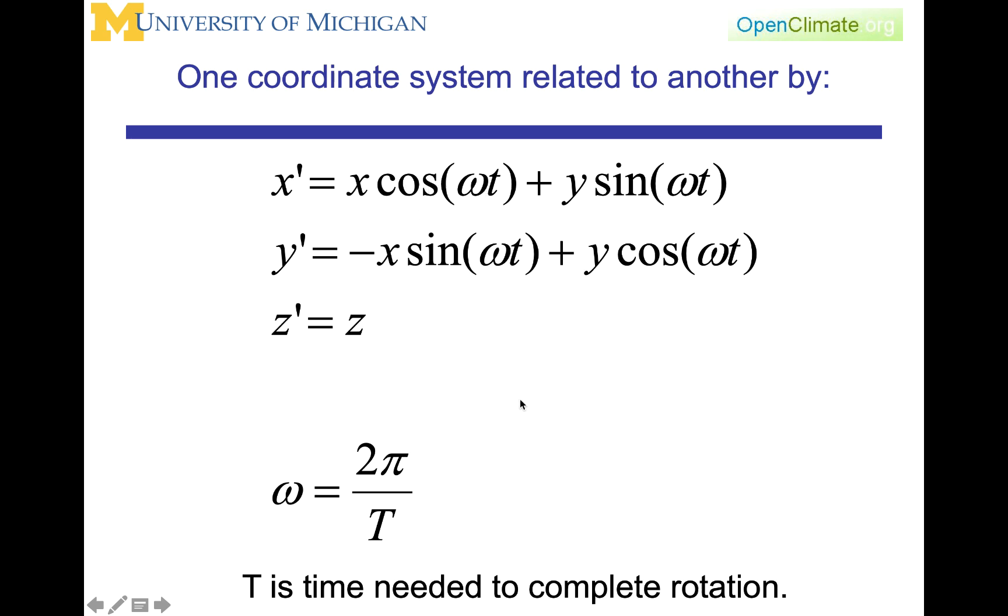y prime is going to be equal to minus x sine omega t plus y cosine omega t, and z prime is going to simply be equal to z.